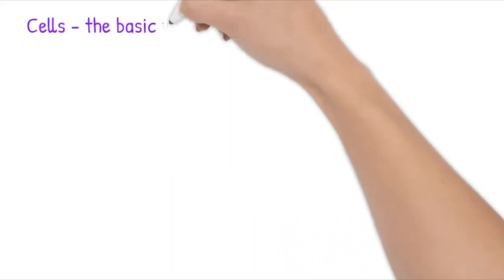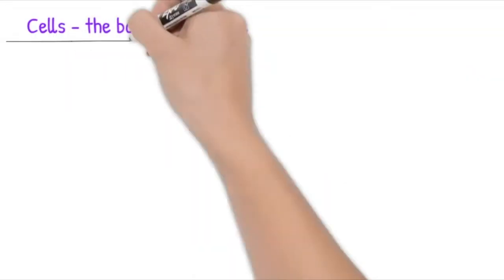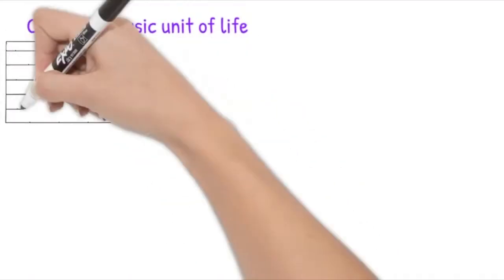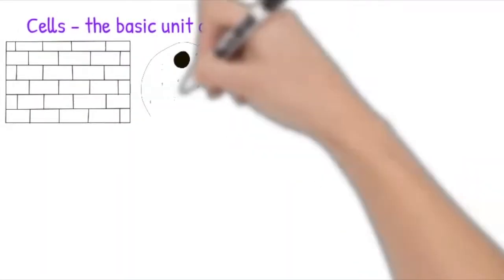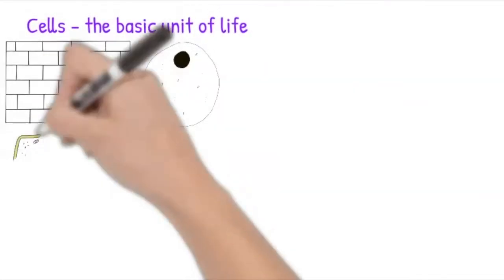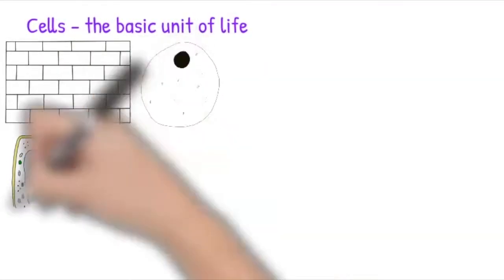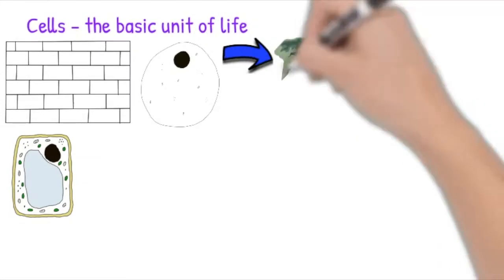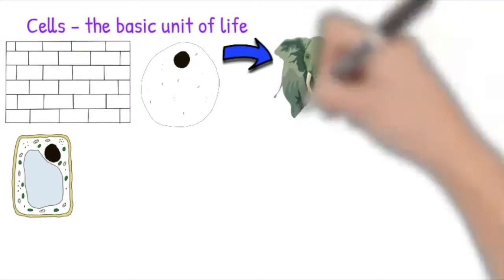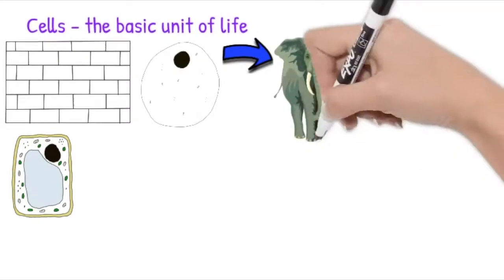Cells are the basic unit of life. Like houses are built up of individual bricks, organisms are made up of one or more cells. Some organisms are only made up of one cell, such as amoeba or yeast, but others such as us are made up of trillions of cells.